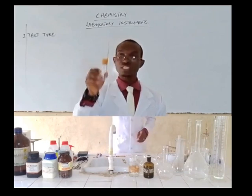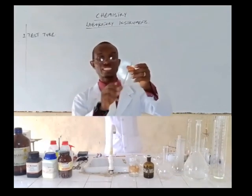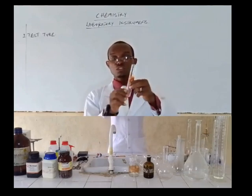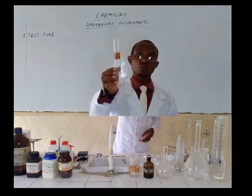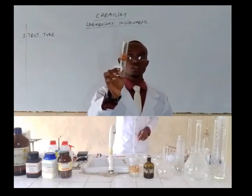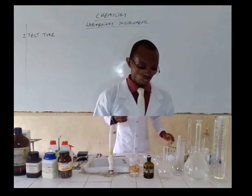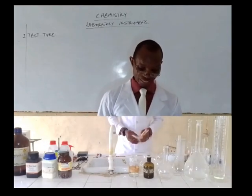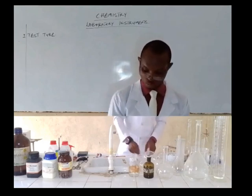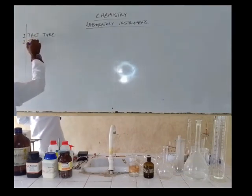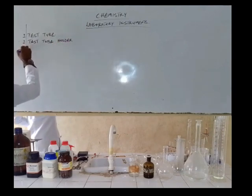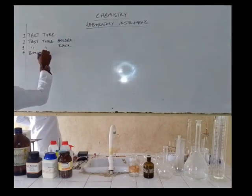Now we have what is called the boiling tube. It looks like a test tube but it is much bigger in size. We actually use this one to heat chemicals — we put whatever specimen we want to heat inside it and then apply heat to it. We don't use the test tube directly for heating; we make use of the boiling tube. So it looks similar in shape to a test tube but it is much bigger.